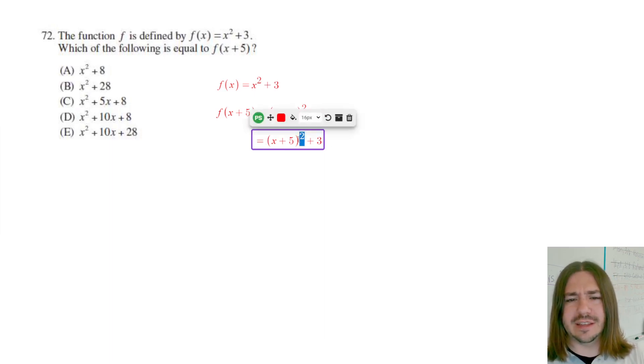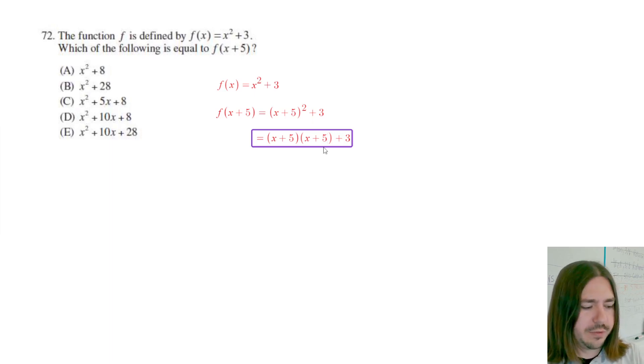the number one error I see is that students want to square both terms inside the parentheses. It doesn't work like that. You'll be missing the linear term if you do that. Instead, let's rewrite this as (x + 5) times (x + 5). When you square something, that just means you multiply it by itself.